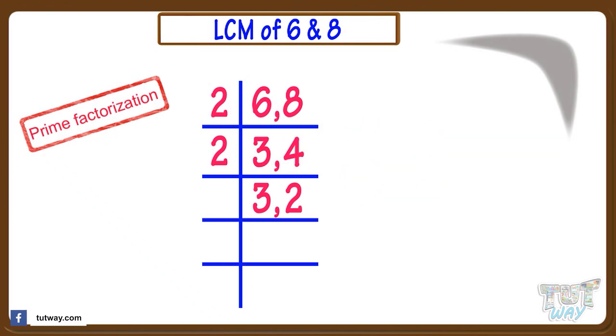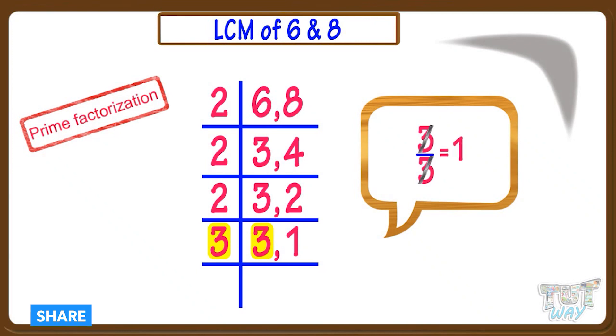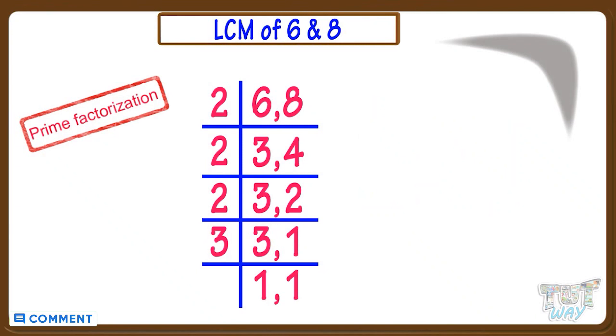Now again, try dividing the numbers by 2. Again, 3 cannot be divided. Write it as it is. 2 divided by 2 equals 1. Write 1 here. Now only one number, that is 3, is left. It cannot be divided by 2. So take next smallest prime number, which is 3. Now 3 divided by 3 equals 1. Write 1, put comma, and bring down 1. Now every number is reduced to 1 and we use only prime numbers.